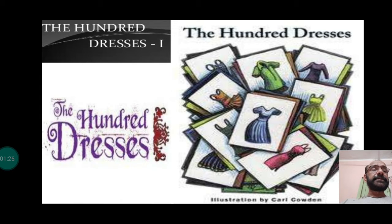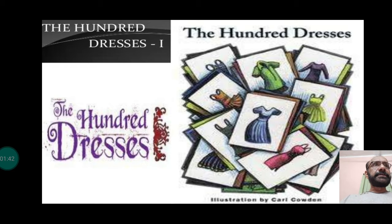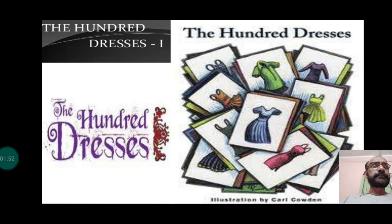Peggy devised a dress game. Now we have to remember how they troubled Wanda. The first thing they did was make fun of her name because it was uncommon, which bordered on racial discrimination. The second thing was that she was poor — everybody knew for the fact that she had only one faded blue dress which was shabby but always clean, and she came to school in that very dress every day. So it was obvious she was poor and had only one dress.